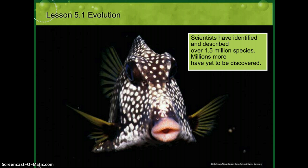In Section 5.1, dealing with evolution, our guiding question is: what role does the environment play in organisms' survival and reproduction? We have a bunch of vocabulary words introduced in this section: evolution, gene, mutation, genetic drift, natural selection, fitness, adaptation, artificial selection, speciation, and extinction.